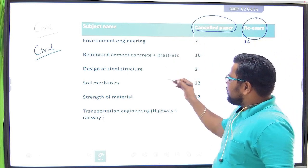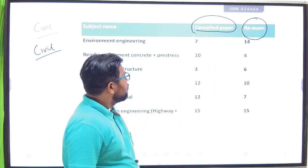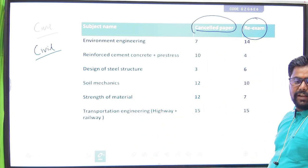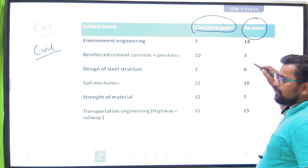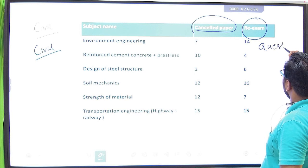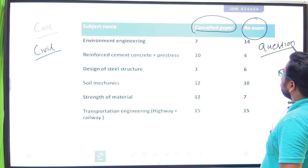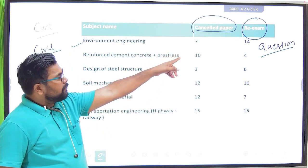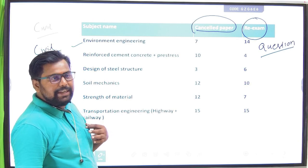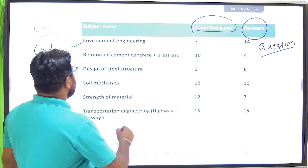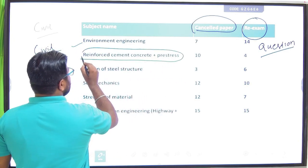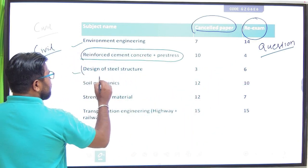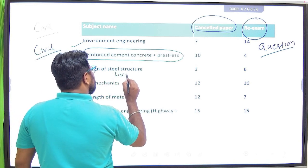So, from different subjects, the number of questions in the cancelled paper and the re-examination paper — each co-subject had 80 questions.